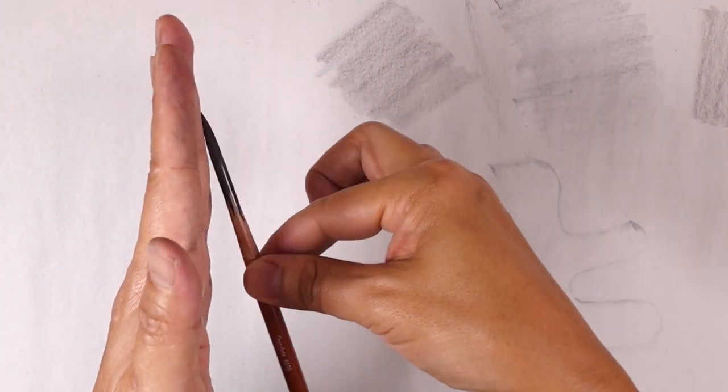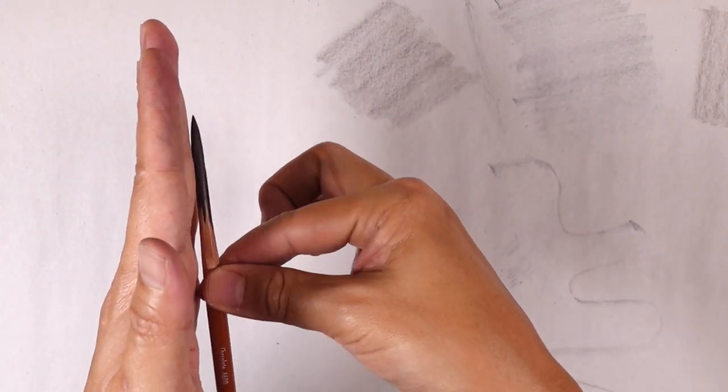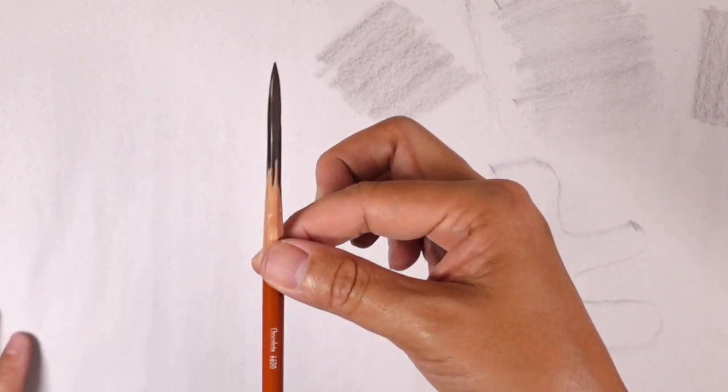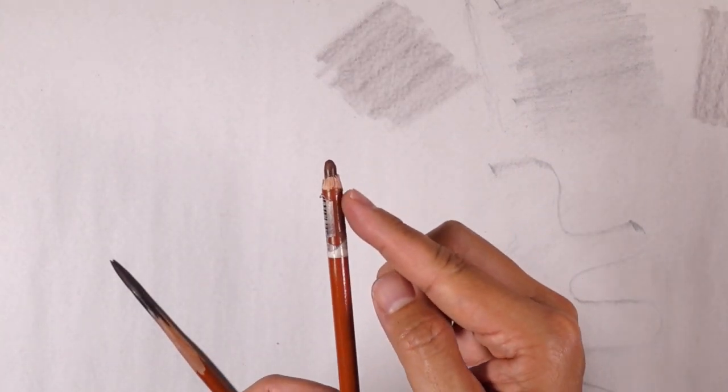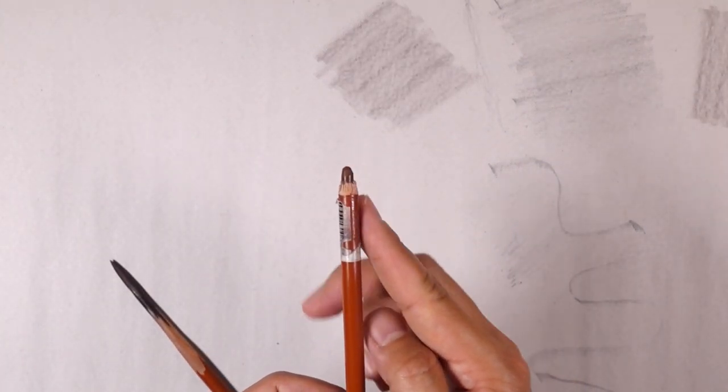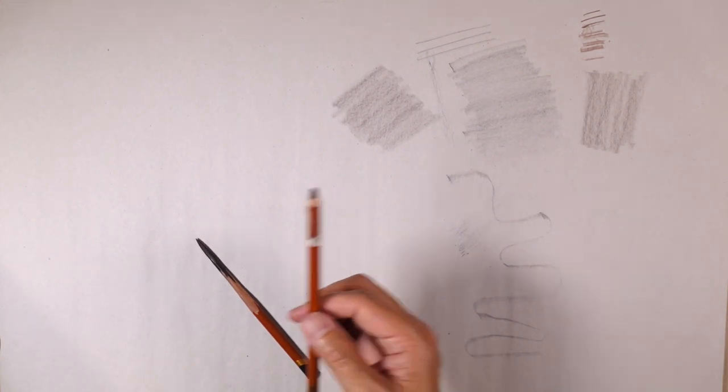By tilting the pencil as close as possible to the paper, you're able to get that as opposed to what we had earlier on when we didn't have that much runway or exposed area from the pencil.